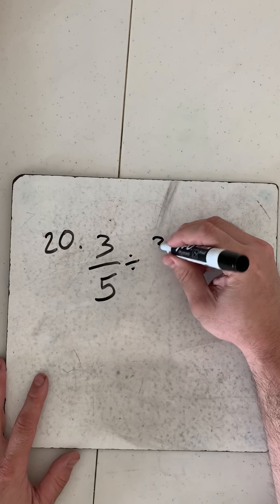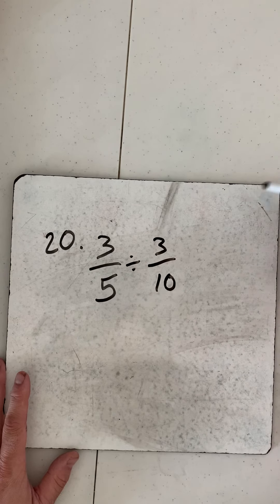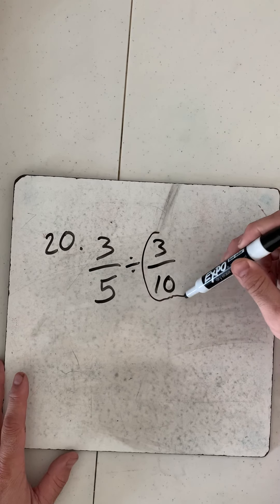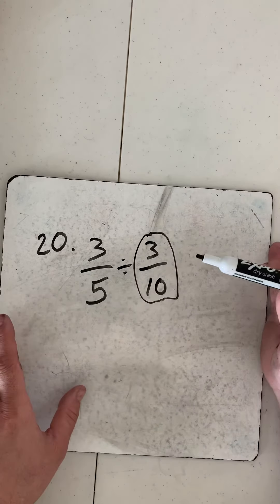First things first, take the reciprocal. I'm taking the reciprocal so the 3/10 becomes 10 over 3. Then I'm going to change my sign. Division becomes multiplication.